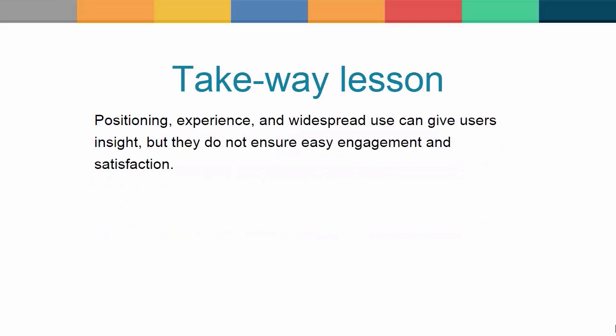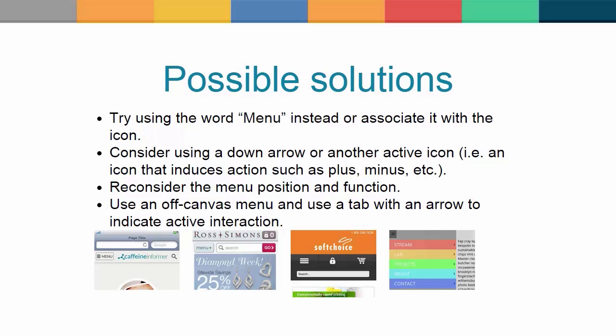So, positioning, experience and widespread use can give users insight, but they do not ensure engagement and satisfaction. The takeaway lesson here is that a solution is never valid for all projects or for every situation. In this specific case, the hamburger menu ended up not being the best answer for a mobile navigation menu. As possible solutions, you can try using the word 'menu' instead, consider using a down arrow or another active icon, reconsider the menu position and function, use an off-canvas menu, and use a tab with an arrow to indicate active interaction.